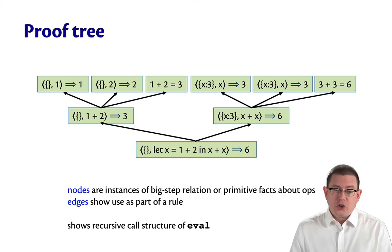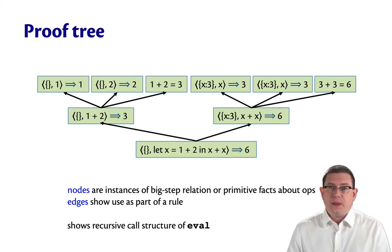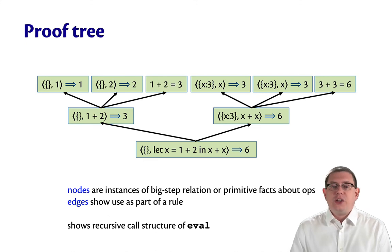And the edges are showing their use as part of a rule, as part of one of these definitions in the big-step semantics. And in fact, you can think of this tree as showing the recursive call structure of the eval function as it would run during interpretation.